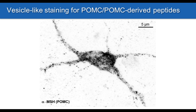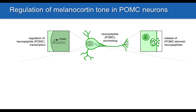As shown in this high-magnification confocal image of one of our stem cell-derived POMC neurons, if we stain for alpha-MSH, which is derived from POMC, we see a very punctate vesicular-like staining pattern. This is consistent with what you'd expect for a neuropeptide packaged into dense core vesicles for release. POMC can be regulated at the levels of transcription and translation, at the level of processing, and at the level of release where it would act on the melanocortin 4 receptor on downstream neurons.